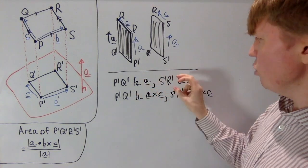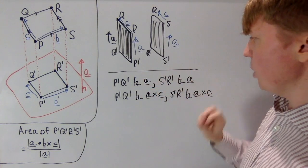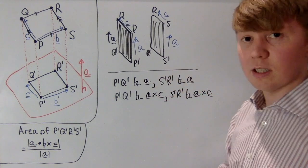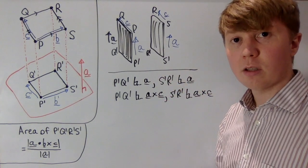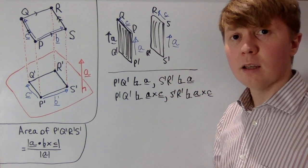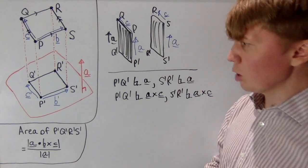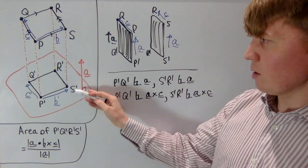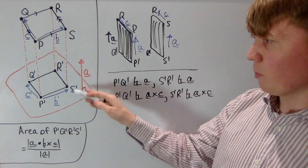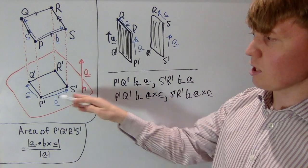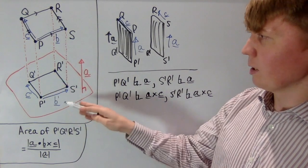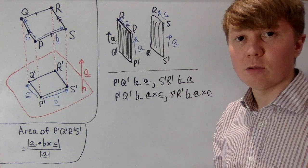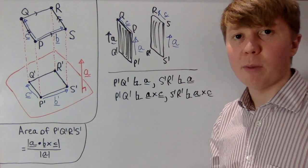So we've shown that p prime q prime and s prime r prime are both orthogonal to two different distinct pairs of vectors, which is enough to say that they're parallel to each other. Similarly, p prime s prime and q prime r prime are both parallel to each other. So we have a parallelogram.